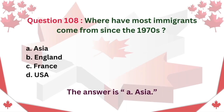Question 108: Where have most immigrants come from since the 1970s? A. Asia. B. England. C. France. D. USA. The answer is A. Asia.